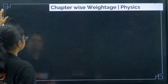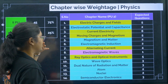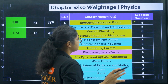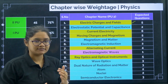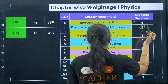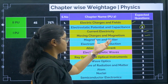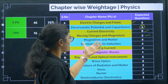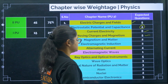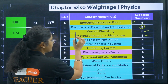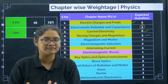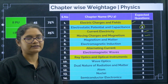Moving to physics — you can expect almost 5 questions from Electric Charges and Fields. Electrostatic Potential and Capacitance is not very high weightage — just 2 questions. Current Electricity: 6 questions. Moving Charges and Magnetism: 5 questions. Magnetism and Matter: 2 questions. Electromagnetic Induction: 2 questions. Alternating Current: 4 questions. The yellow highlighted topics are high weightage topics where you can expect 4 to 6 questions. You can take a screenshot of this.